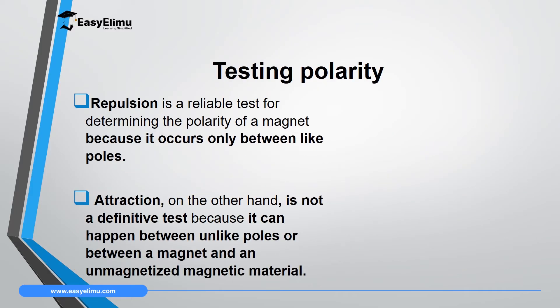Since we have discussed magnetic poles and how they interact through the basic law of magnetism, it is important to know how we can identify the type of pole in a magnet when the magnet is not labeled. I want to bring three cases.